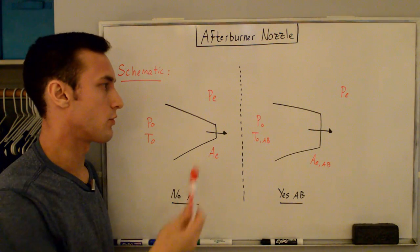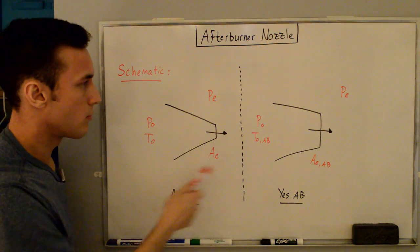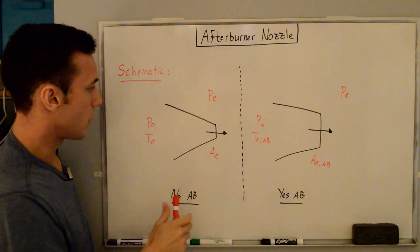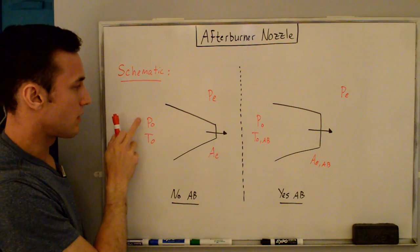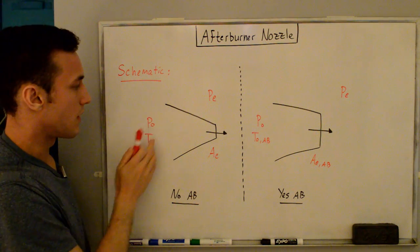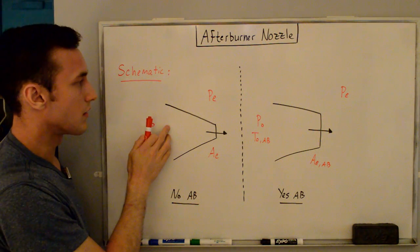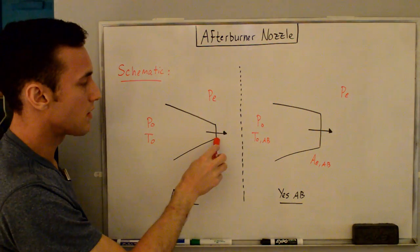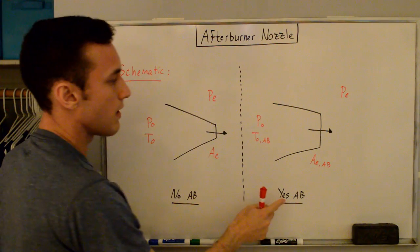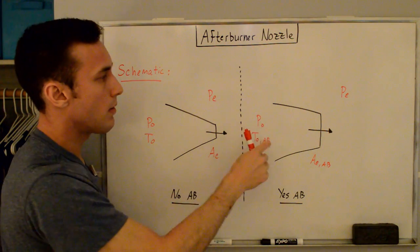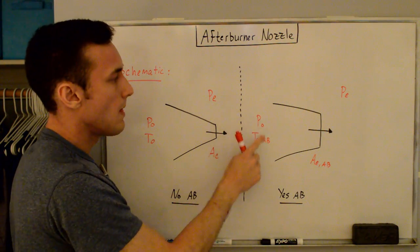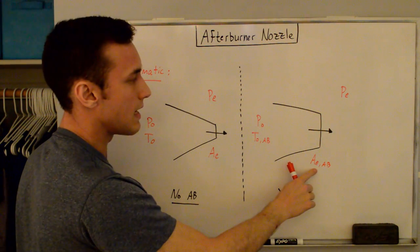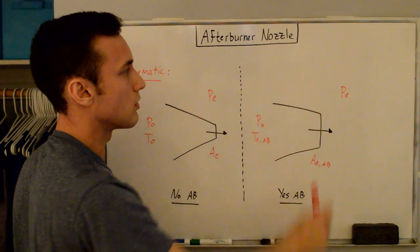Here are simplified schematics with variables included. For the non-afterburning case, the nozzle converges to a throat with stagnation pressure P₀ and stagnation temperature T₀ at the inlet, expanding to exit pressure PE and exit area AE. For the afterburner-on case, the area has opened up — same stagnation pressure but higher stagnation temperature — with exit area AE_AB, still exhausting to atmospheric pressure PE.